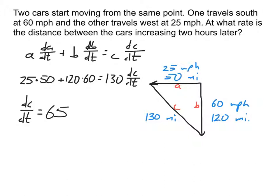Working through the arithmetic and dividing by 130, we get dc/dt = 65 miles per hour. You might notice that 25² + 60² = 65² also holds — the rates satisfy Pythagorean theorem here too. However, this only works because of the specific structure of this equation. Don't assume you can shortcut that way with other problem types like the cone problem; it won't work in general.